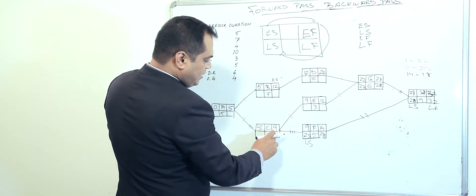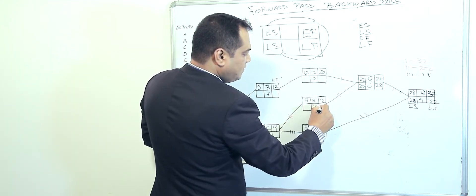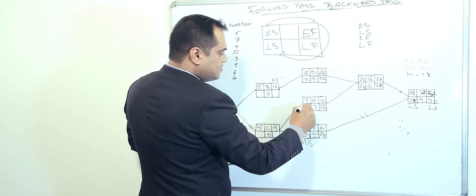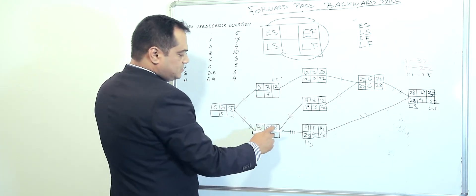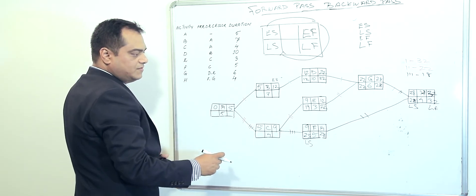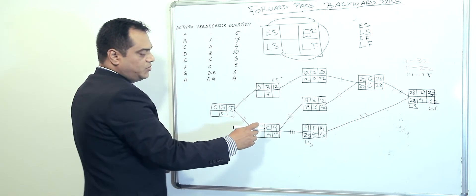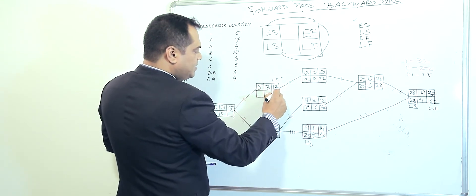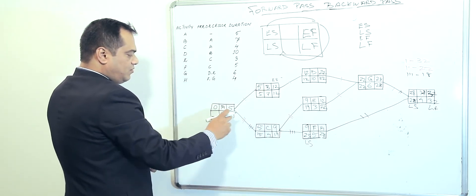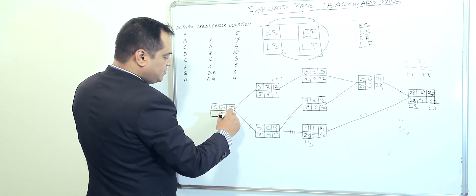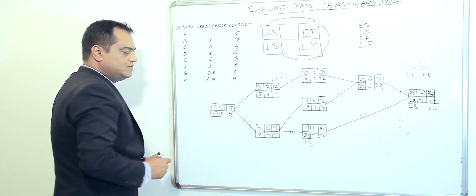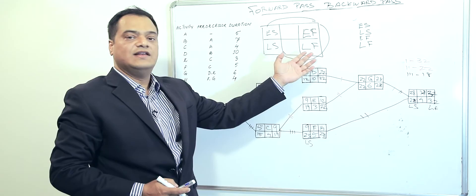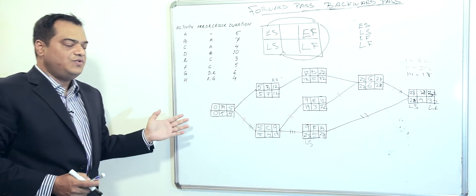Going back further: from twenty-two, D's latest start is twenty-two minus ten equals twelve. For E, twenty-two minus three is nineteen. We bring the lowest of both, so nineteen minus four gives fifteen for C. Then twelve comes back here; twelve minus seven is five. Taking the lowest of both gives five, and five minus five is zero. So by doing the forward pass we calculate early start and early finish, and by doing the backward pass we calculate late finish and late start.